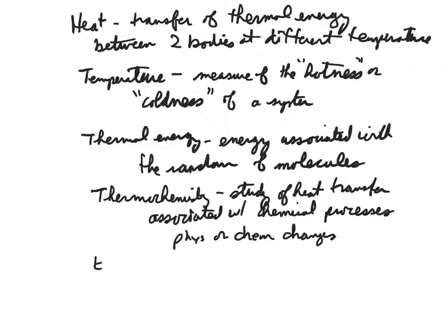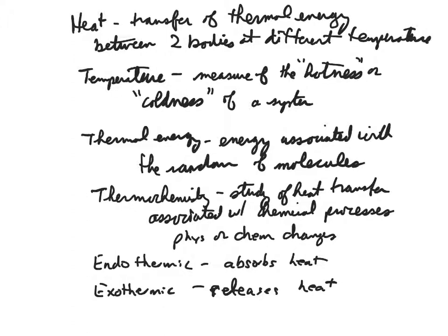We can talk about endothermic versus exothermic processes. An endothermic process absorbs heat, and an exothermic process releases heat. A little bit fancier way of saying that is that in an endothermic process, heat is supplied to the system, whereas an exothermic process releases heat to the surroundings.